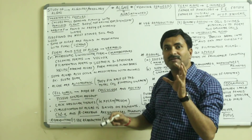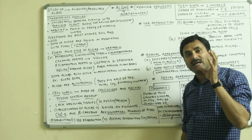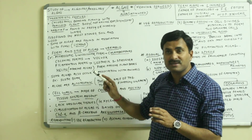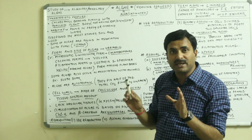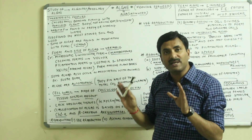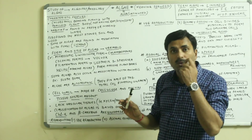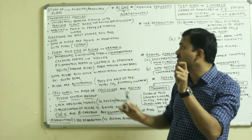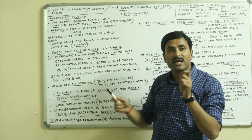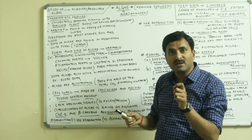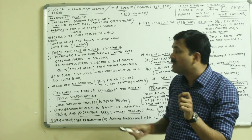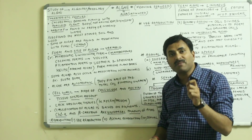Now let's have a discussion on the characteristic features of algae. Algaes are chlorophyll-bearing plants. They are a simple category of plants which are having thallus body. Their plant body is thallus — that means the true root, stem, and leaves are absent — so they are actually called as the thallus bodies. So they are chlorophyll-bearing plants which are having simple organization and a thalloid plant body.